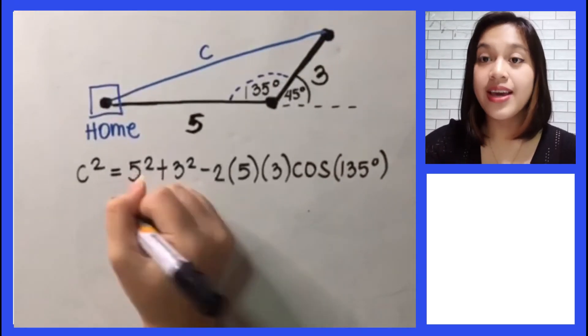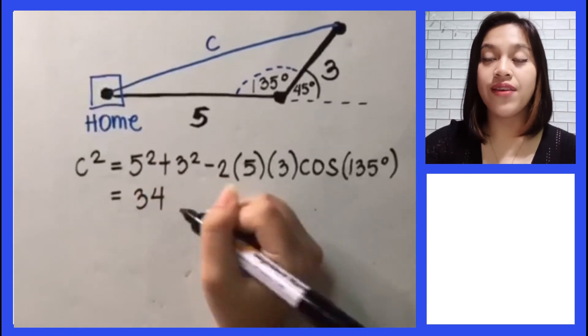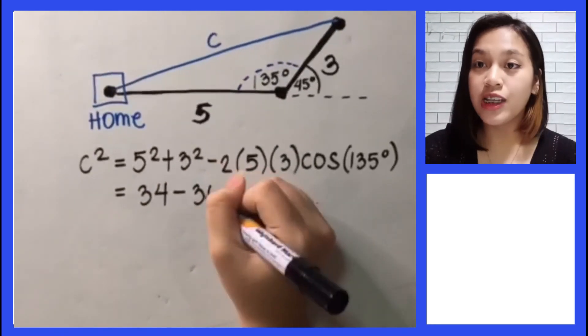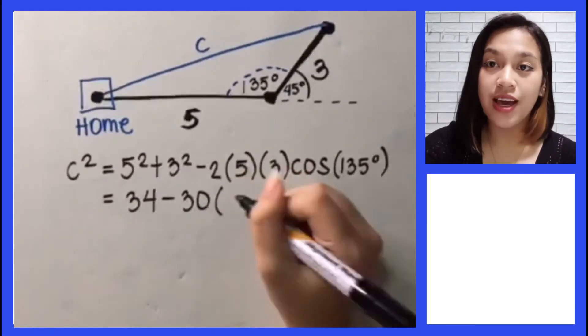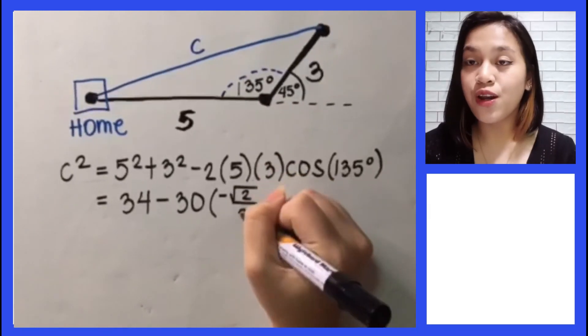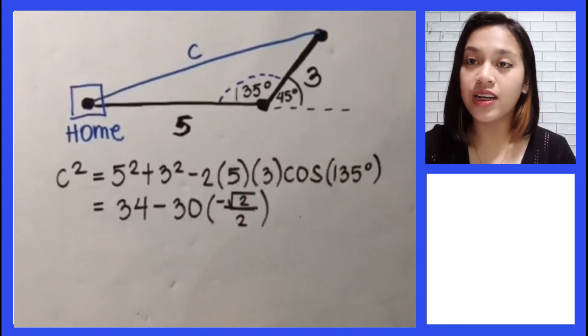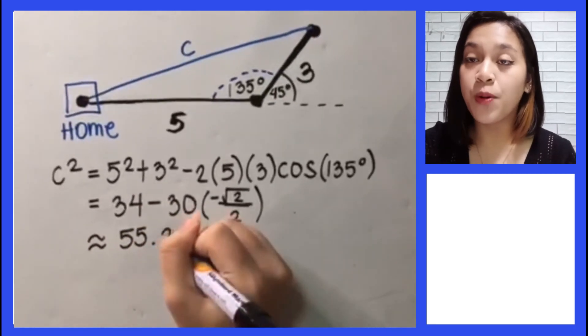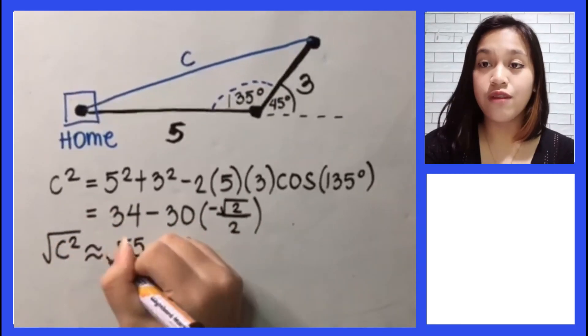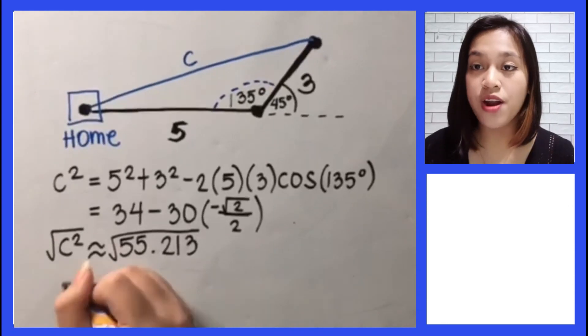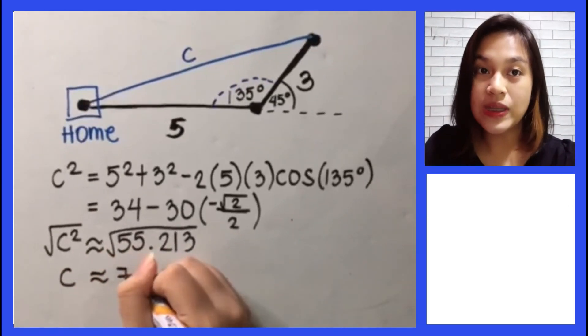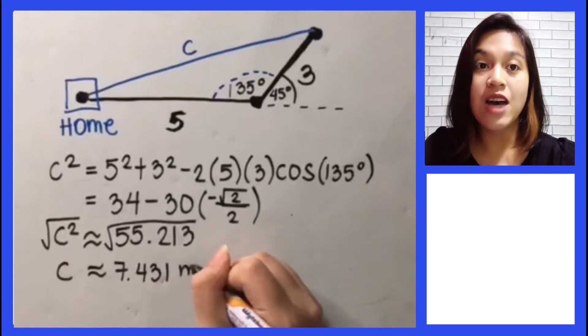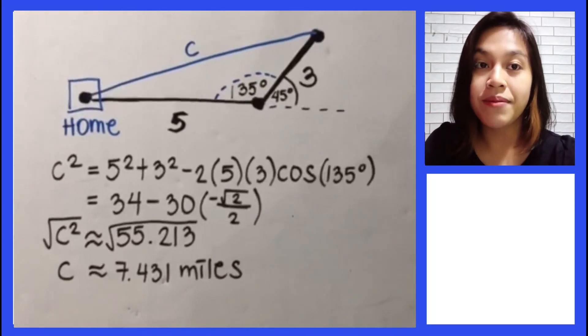Next is to simplify. 5 squared equals 25 and 3 squared equals 9, for a total of 34, minus 30. And cosine of 135 degrees is negative square root of 2 over 2. And the answer is 55.213, and that is the value of c squared. Then square root both sides. So c is approximately equal to 7.431 miles.